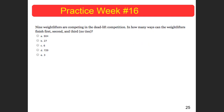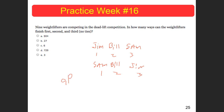Nine weightlifters are competing in the deadlift competition. In how many ways can they finish first, second, and third? Is Jim-Bill-Sam finishing first, second, third different from Sam-Bill-Jim? Absolutely — Jim always wants to be first, so order does matter. This is nine permutate three — nine weightlifters, three places (first, second, third). Plugging into Desmos: nine permutate three gives 504 different ways that they could finish.